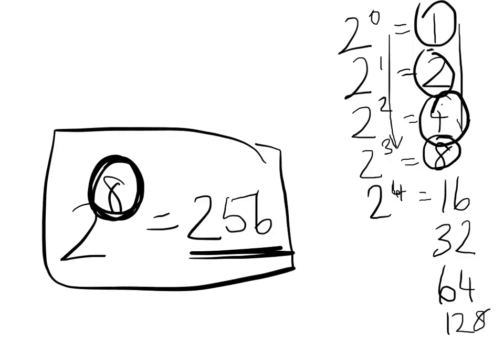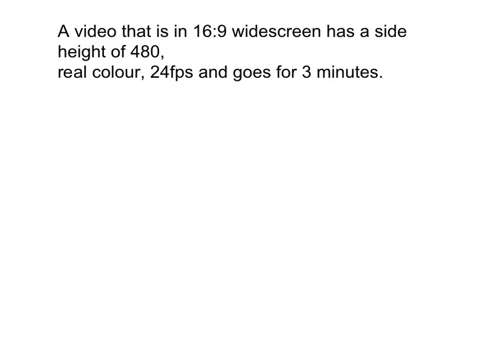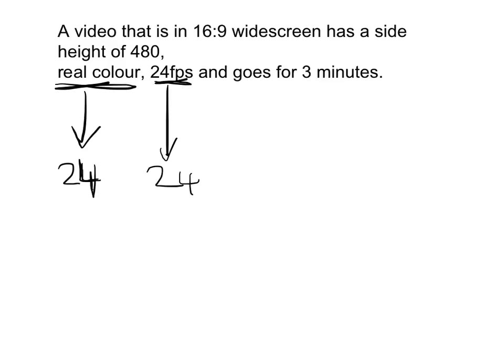The reason I do this is because I can just count up the doubles rather than calculate powers. Going back to our question: we now know that real colour means the bit depth is 24. We have 24 frames per second, and we've got 180 seconds. So we've got three pieces of information. And if we take the height as the fourth piece of information, we've also got the height which is 480. But how do we find the width?